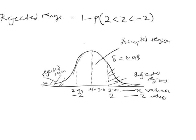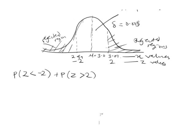For the rejected range, it is 1 minus the probability that minus 2 is less than z less than 2, which is the same as the probability of z less than minus 2 plus the probability of z greater than 2 — that is, the sum of both tail areas. Now we have to find each of these probabilities from the z-table.